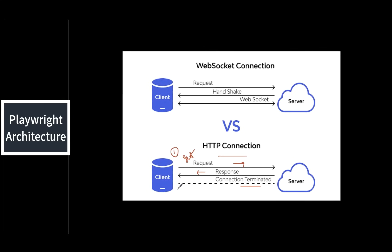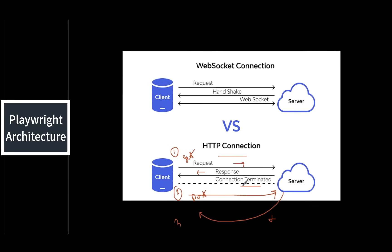For example, this is my first request. Then for the second request, you want to send again — it could be a POST call, a DELETE call, or any HTTP method. You send it, get the response, and then the connection is again terminated. The same happens for the third, fourth, and so on. That's why it takes time — every request needs a separate HTTP request and response cycle, and then the connection is terminated.